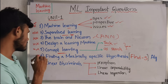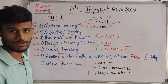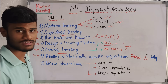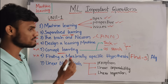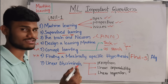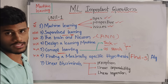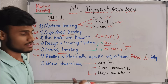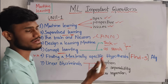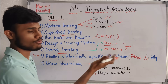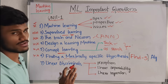Next we have the Find S algorithm. Find S algorithm is a very very important algorithm which is repeatedly asked in JNTU question papers. Find S means Find A Maximally Specific Hypothesis Algorithm. This is a very important question.